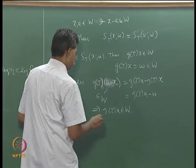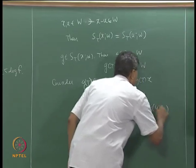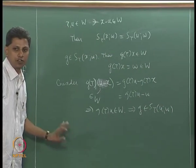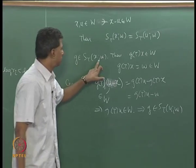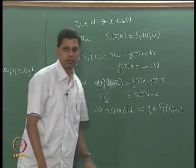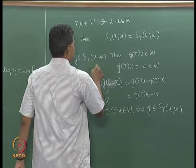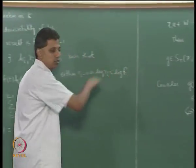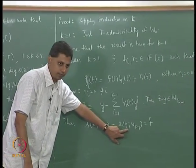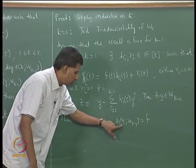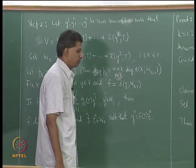So g belongs to st(x, W) implies g belongs to st(u, W), and the whole process can be reversed. Since those ideals are the same, the monic generators are also the same. So we get that s(z, W_{k-1}) equals s(y, W_{k-1}), and the notation for this polynomial is f.